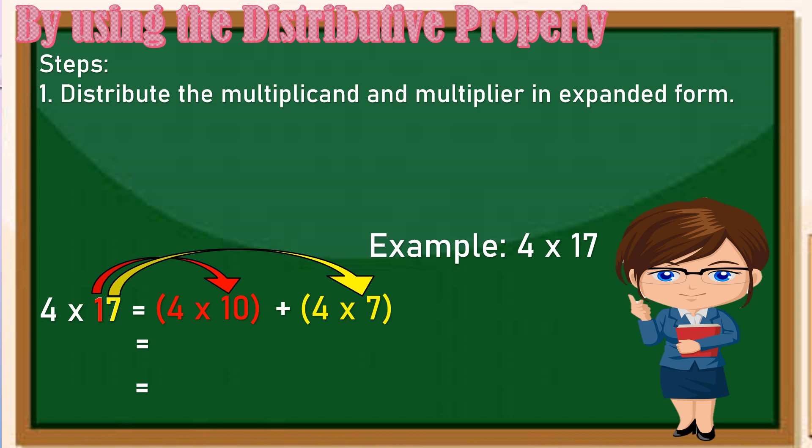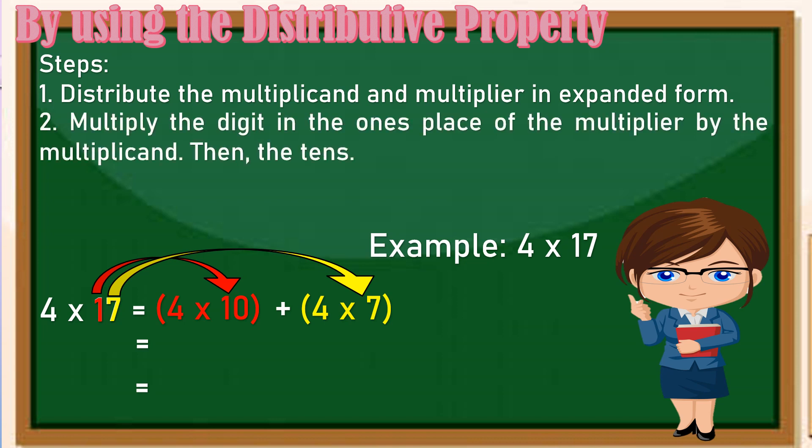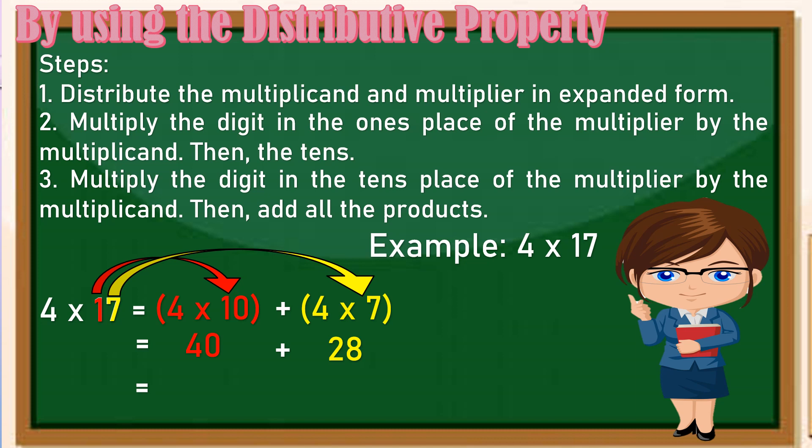Pagkatapos natin mag-distribute ang multiplican at multiplier in expanded form, next step natin ay multiply the digit in the ones place of the multiplier by the multiplicand, then the tens. So multiply natin 4 times 10 is 40 plus 4 times 7 is 28. Then third step, multiply the digit in the tens place of the multiplier by the multiplicand then add all the products. Pagkatapos natin may multiply ang lahat ng multipliers sa multiplicand, pwede na natin siyang i-add. So we have 40 plus 28 is 68.